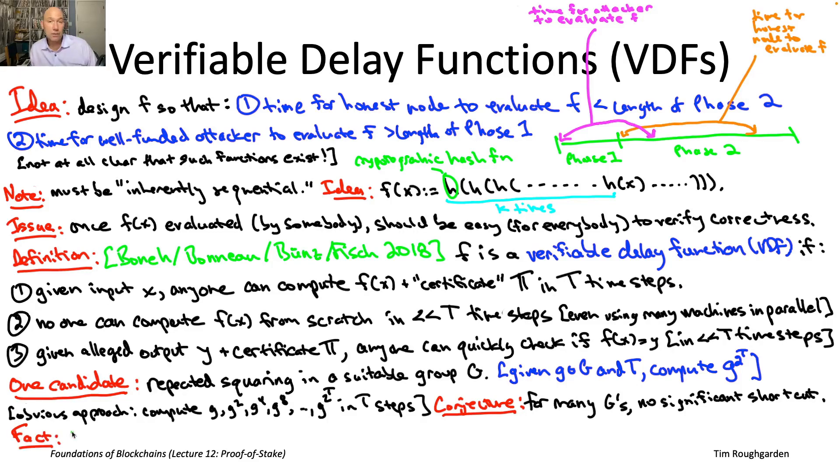So these are two different constructions, both based on the repeated squaring idea but using different approaches to computing the certificate pi, done independently, both coming out in that same year 2018, about five years ago. One by Pietrzak and the other by Wesolowski.